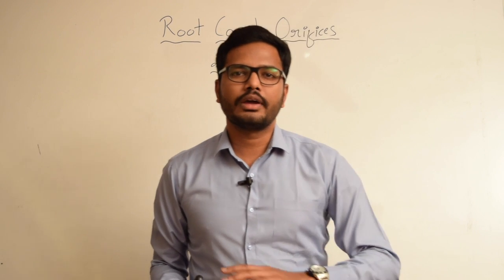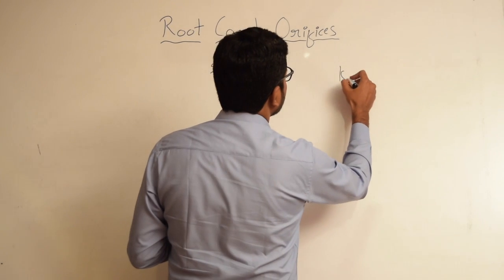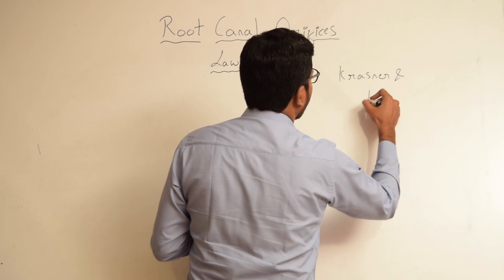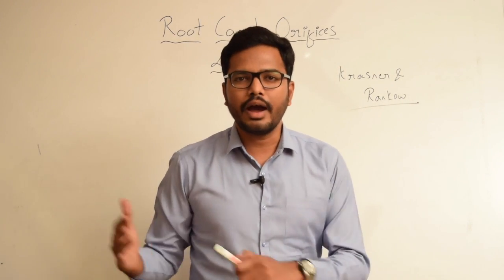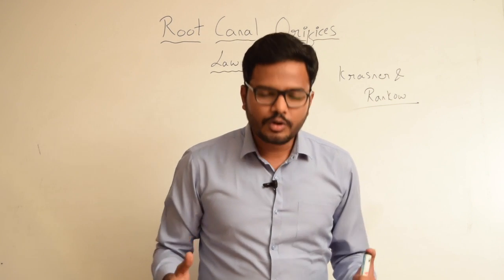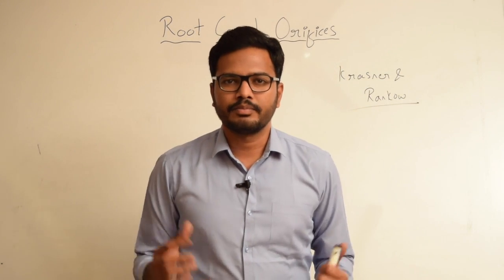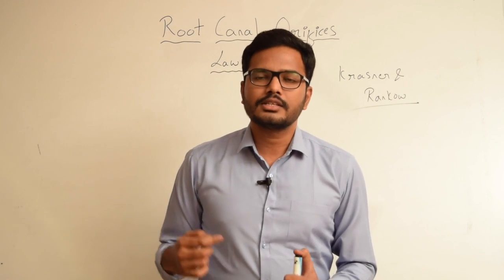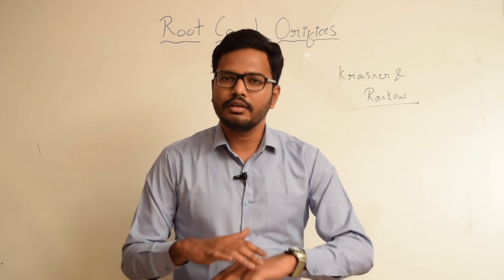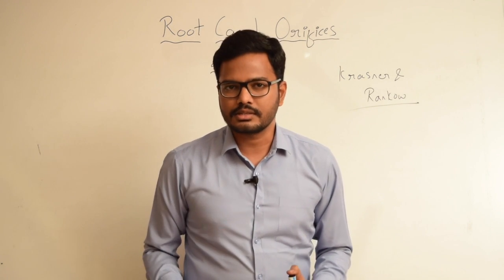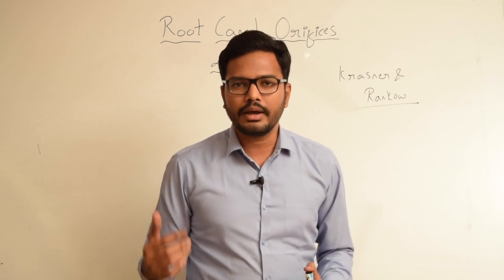In this video I will be discussing various laws for locating root canal orifices. Krasner and Rancao, two scientists, have done extensive studies in this area. They studied around 500 pulp chambers and proved that the cementoenamel junction (CEJ) is the most important landmark for locating the pulp chamber or root canal orifices. They explained a specific pattern in arrangement of pulp chamber walls and floor, and gave several laws to assist clinicians in identifying root canal orifices.